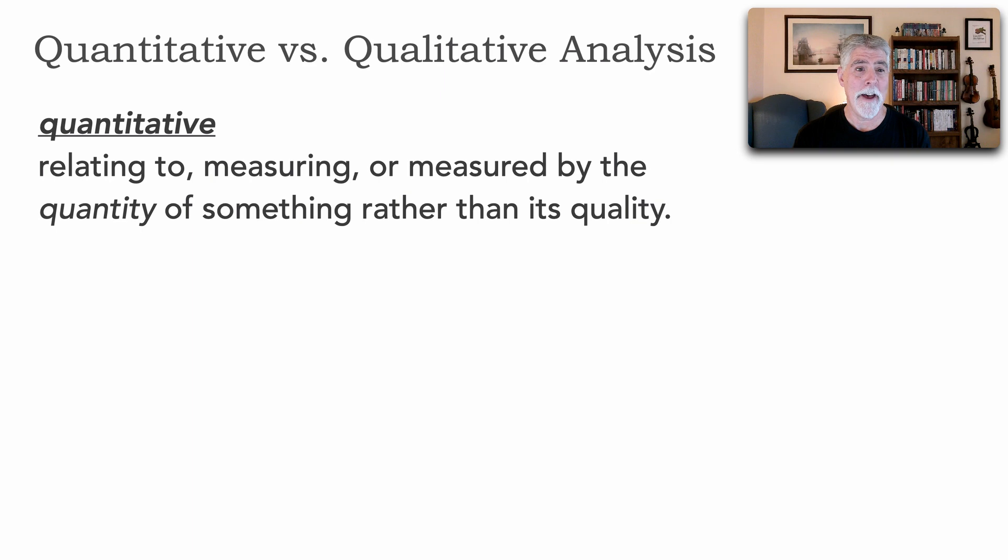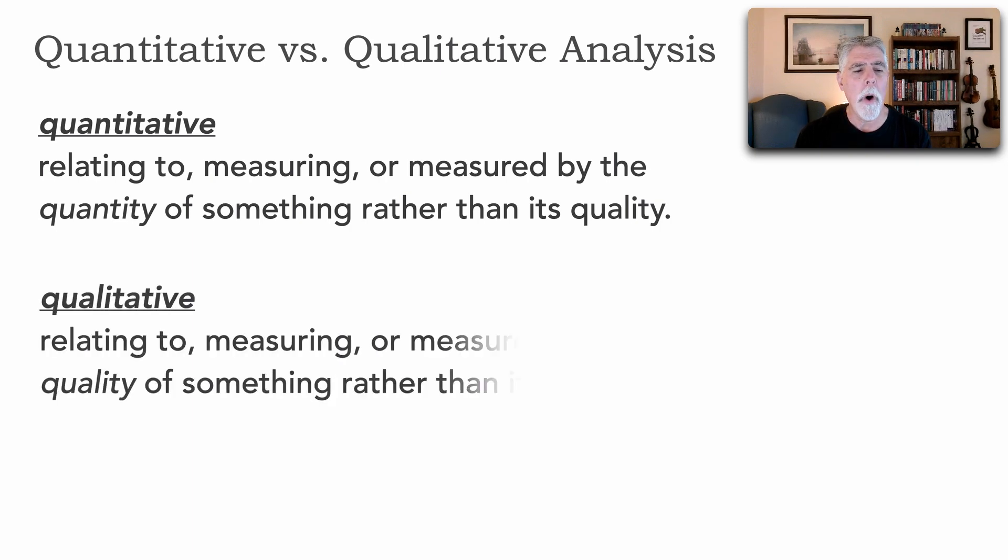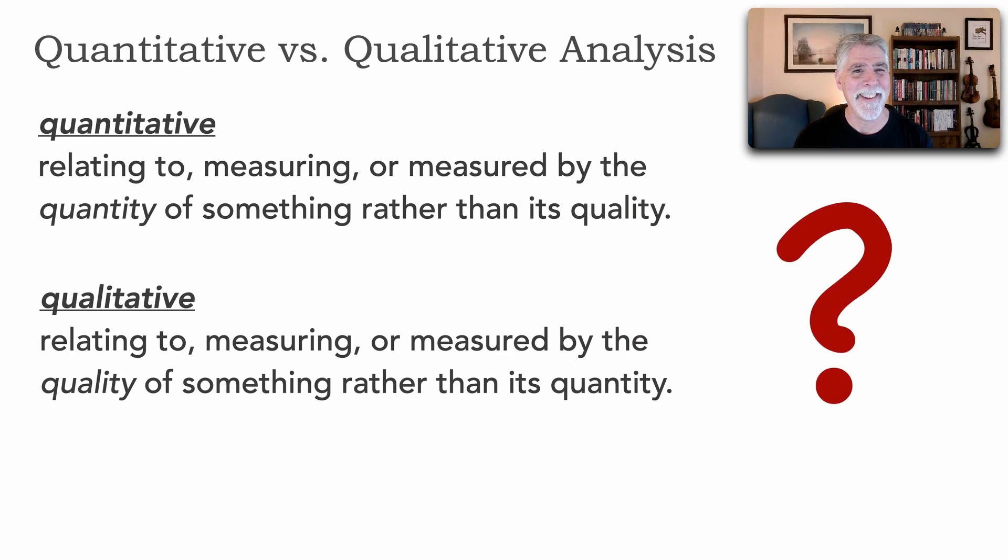So quantitative analysis is relating to measuring or measured by the quantity of something rather than its quality. Whereas qualitative analysis is relating to measuring or measured by the quality of something rather than its quantity. What in the world does this mean? Well, these definitions individually seem clear, but together it's not very clear how I could use each of these analysis techniques to analyze various aspects of architecture to help me make some architecture decisions. So let's take a look at what each of these two types of analysis techniques mean and how to actually leverage them.